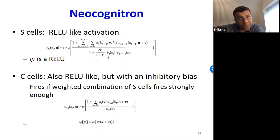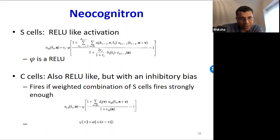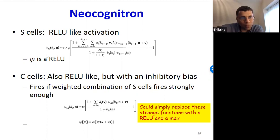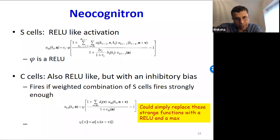The neocognitron has formulae for the activations of S and C planes. The S cell computes a weighted sum of an elliptical region of the previous C plane and applies an activation — effectively a ReLU. The C cell looks at an elliptical region of the S plane response and picks the largest value — effectively a max. As you go through the network, the C planes keep getting smaller and the receptive field of any cell in the C plane keeps getting larger.